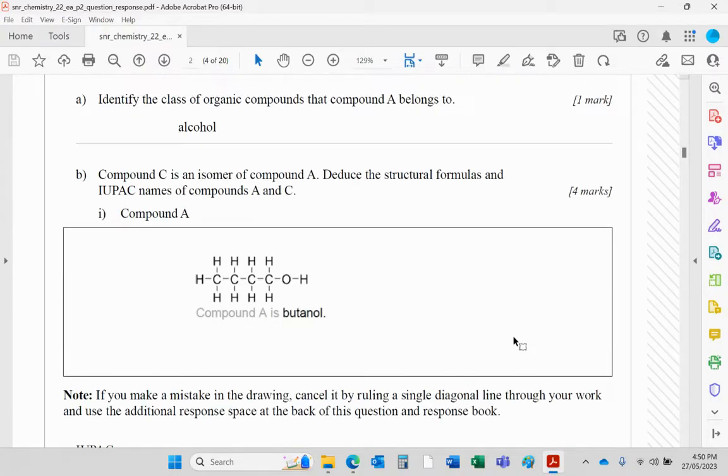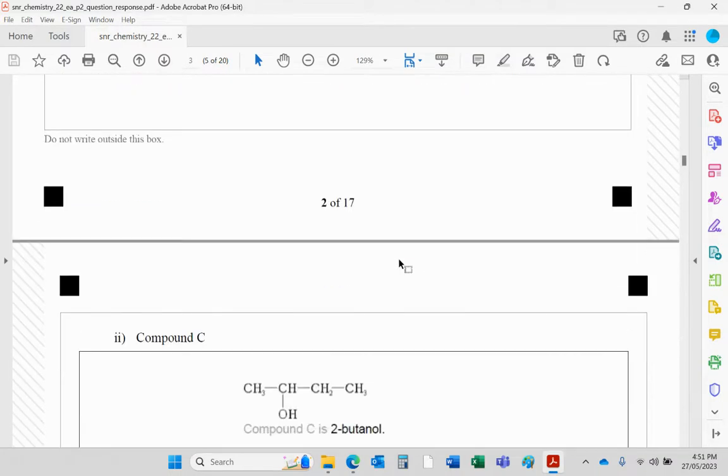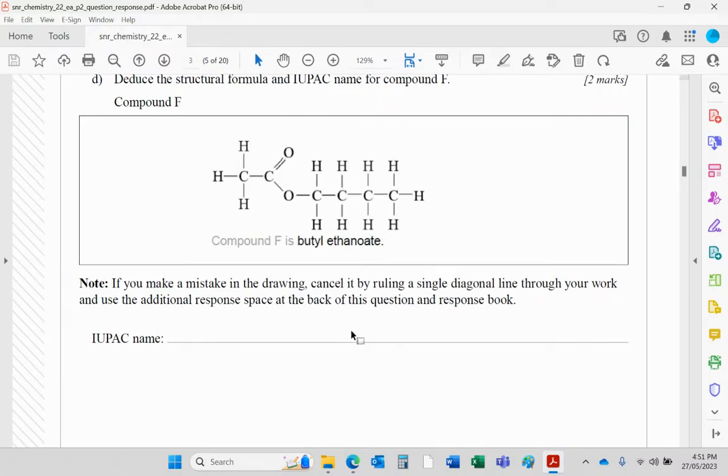Compound F. Compound F is an ester. It comes from butan-1-ol and ethanoic acid, so that would form butyl ethanoate. The structure is given to you. Here you see it. There's your butanol bit, there's your ethanoic acid bit. When you name an ester, name the alcohol portion first (butyl), carboxylic acid portion second (ethanoate). The name goes there, please.